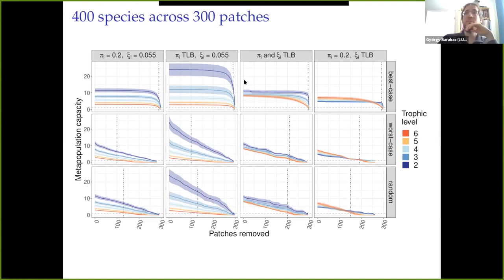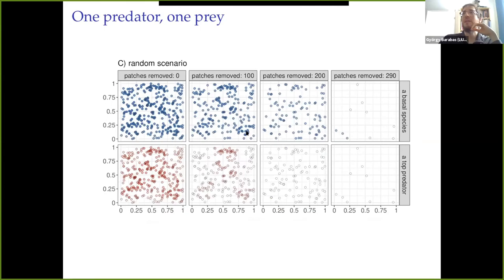So what we can see is pretty much consistent with what we have. What really matters is that this is the best case, worst case, and random scenarios. And once again, you see that the metapopulation capacities decline much slower. They start declining much slower than in the worst or random scenarios, which are very similar to one another again. And I should mention that the vertical dot dashed line is where the top predator goes extinct in this case. So you can see that that extinction happens only very late when we've removed almost all the patches for the best case scenarios, and for the worst and random scenarios they happen much, much earlier.